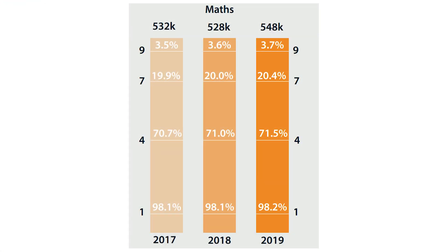What sort of percentages of people get the different grades? Around 98% of people get at least a grade 1, so in a school with 100 people in a year group, 98 will get at least a grade 1. Around 70 to 72 will get a grade 4 or better. About 20% will get a grade 7 or better. And about 3.5% — around 3 or 4 people out of 100 — will end up getting a grade 9. So it's pretty tricky to get a grade 9; you've got to be in that top few percent.